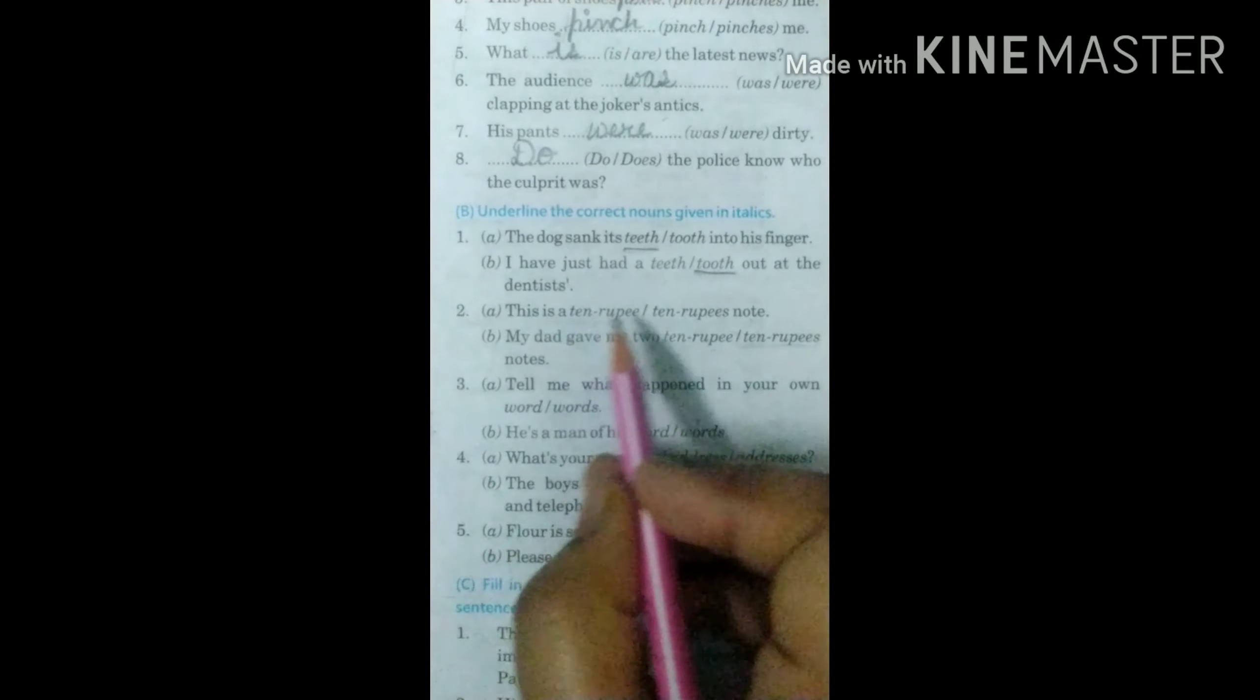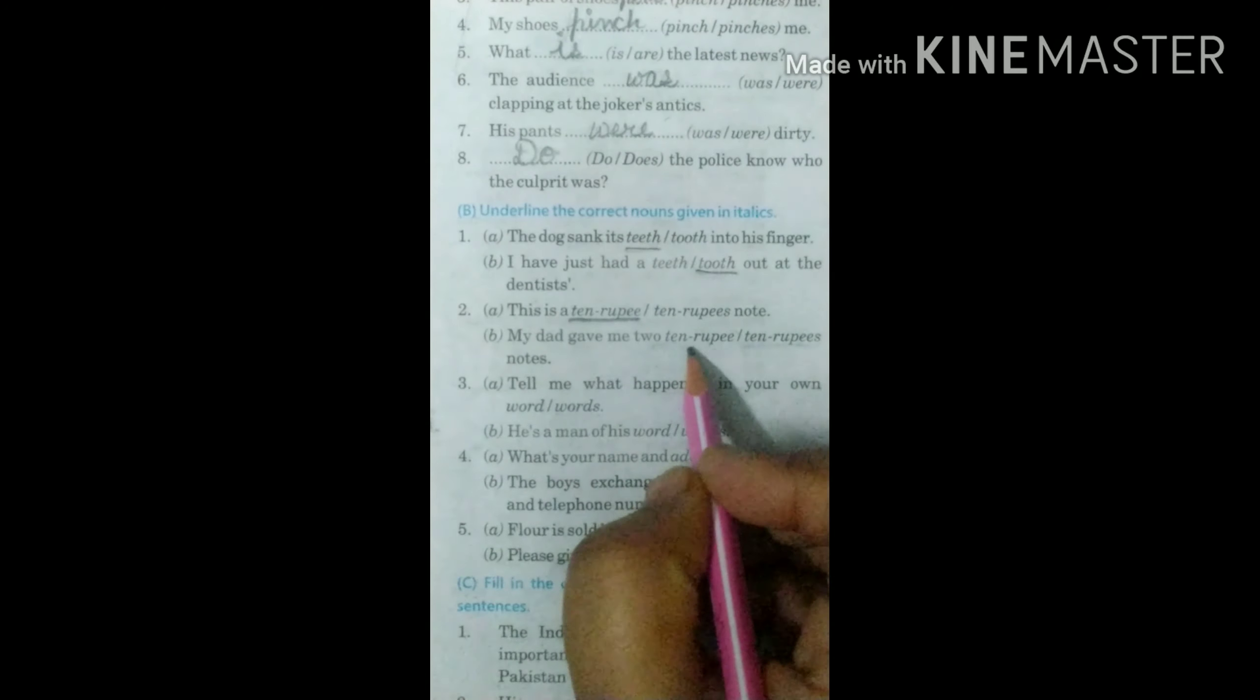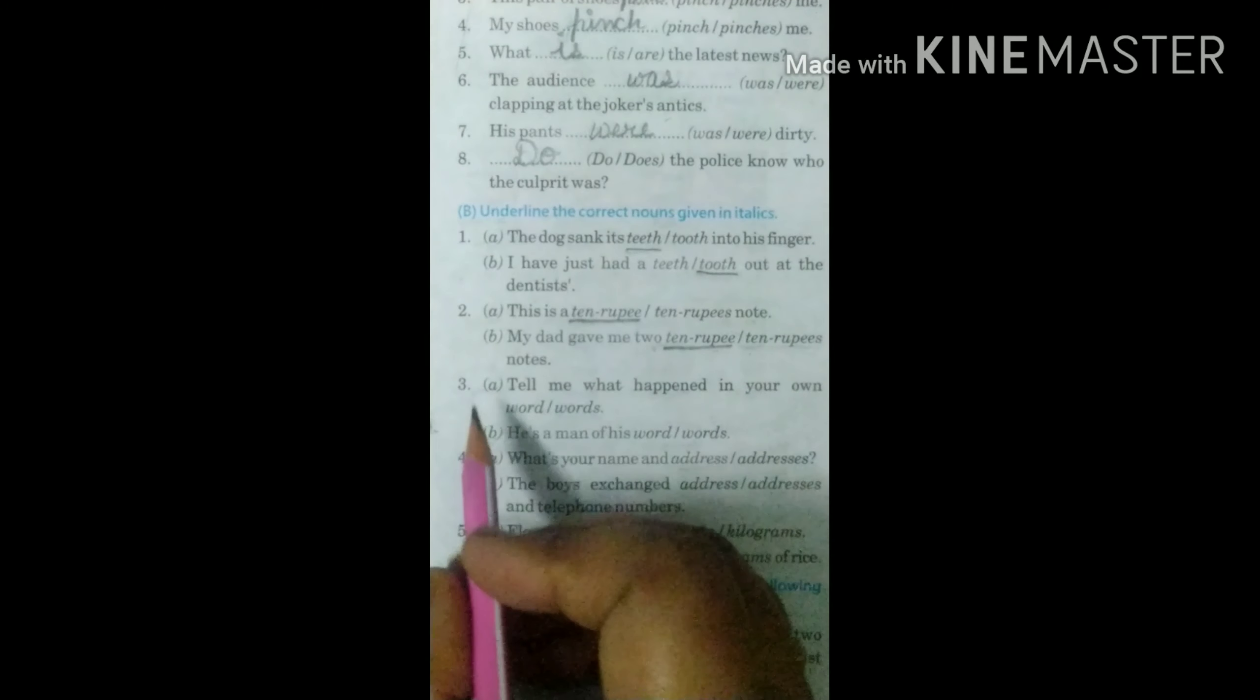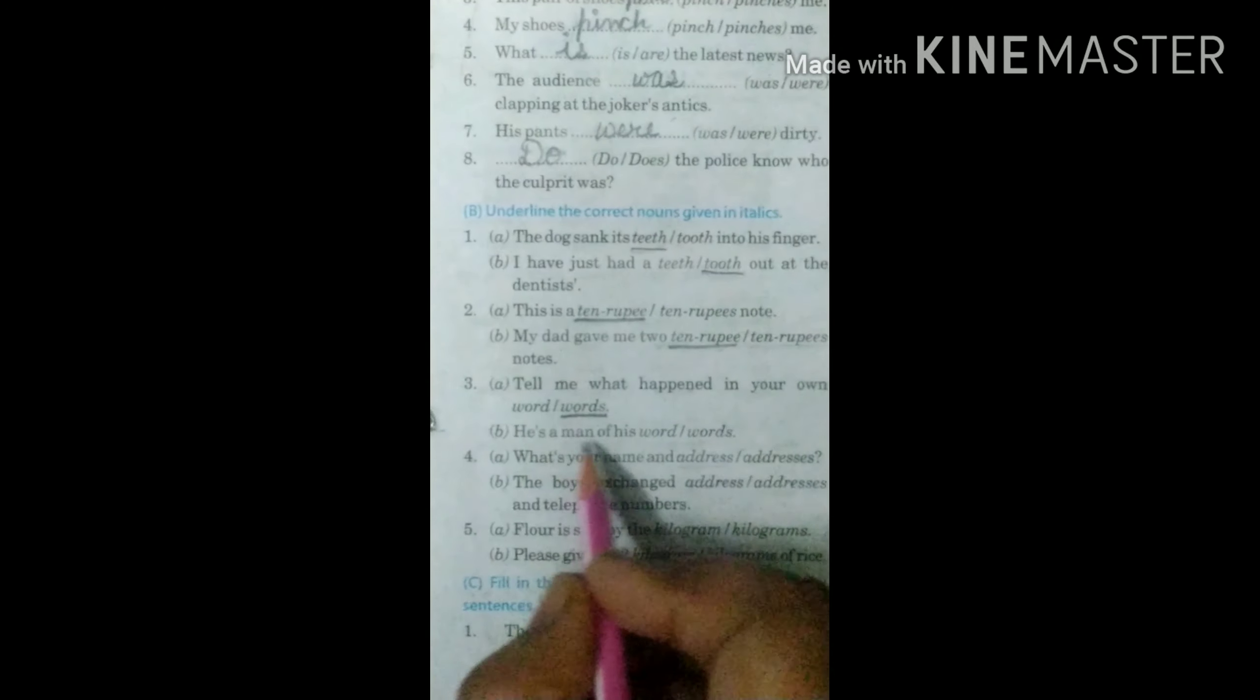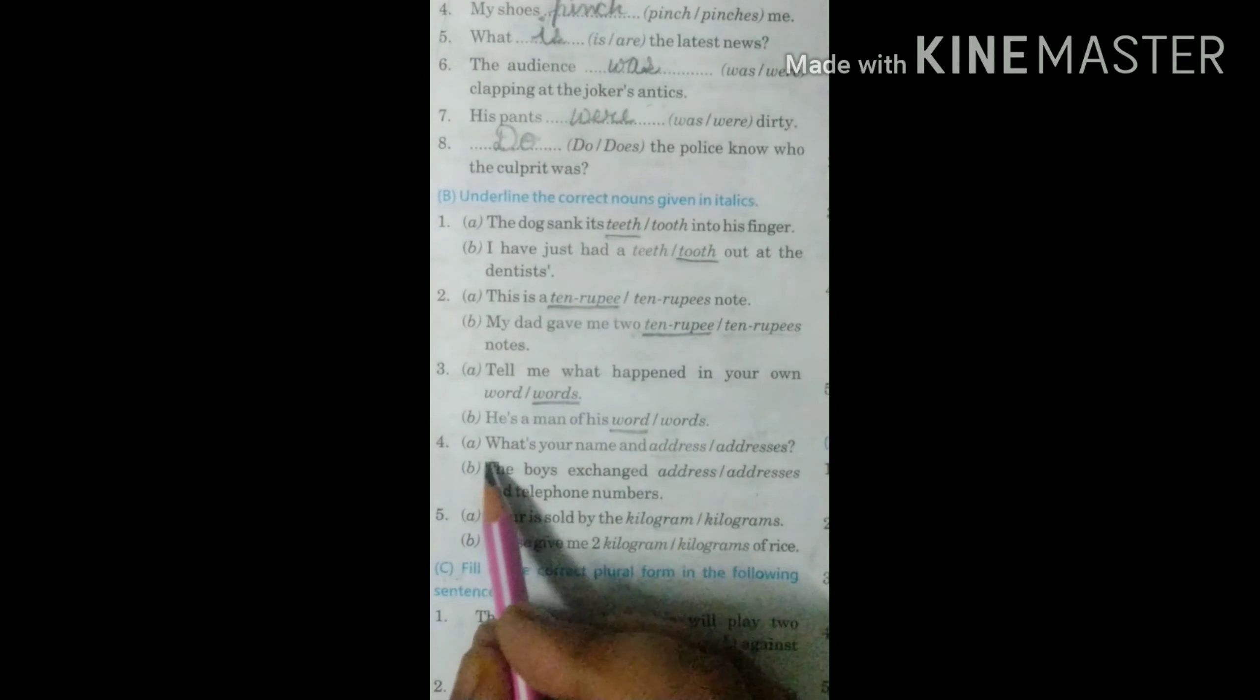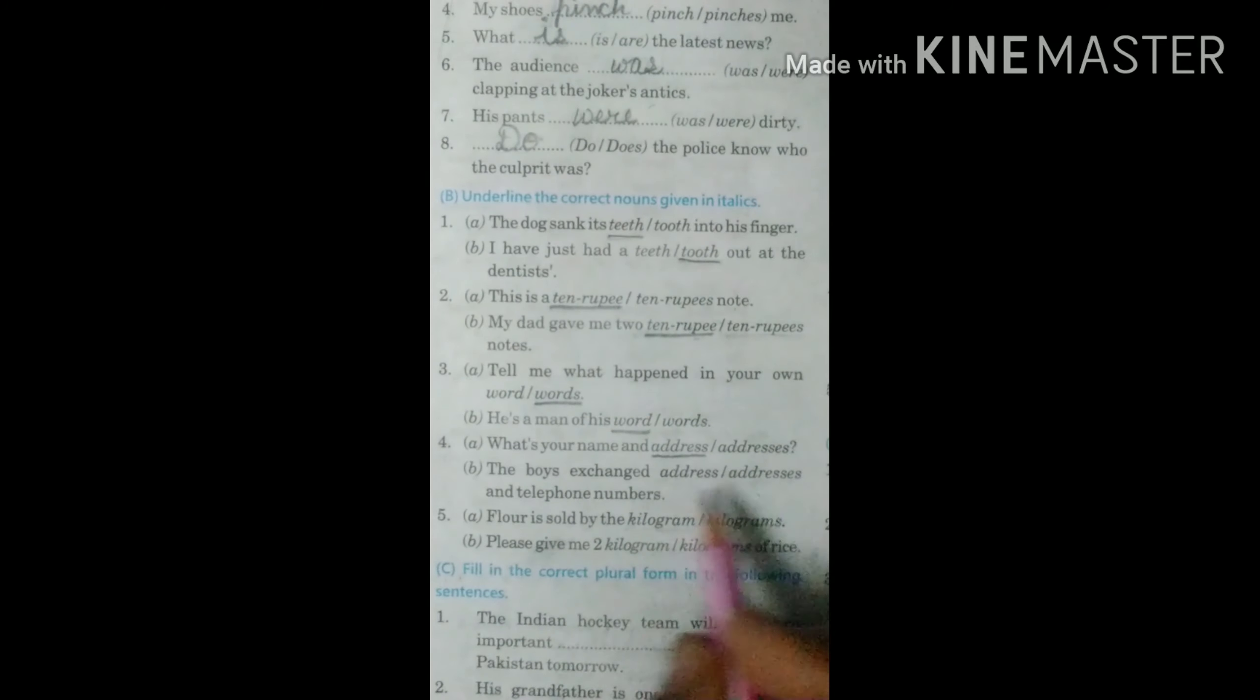Second is this is a dash note. A 10 rupee note. My dad gave me 10 rupee notes. Two 10 rupee notes. Third is tell me what happened in your own words. Next is he is a man of his word. Next is what's your name and dash address, not addresses. The boys exchanged dash and telephone numbers, addresses and telephone numbers.